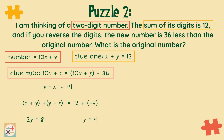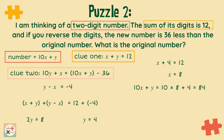Now we have two equations we can solve simultaneously: x plus y equals 12 and y minus x equals minus 4. To solve these simultaneous equations we can add them together to eliminate the x variable in order to solve for y. Now we know that y equals 4. We can substitute the value for y into our original equation x plus y equals 12 to find x. So the original number is 84.